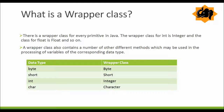Sometimes you will see later on with collections that you want to hold collections of objects and primitives together, and there you will need wrappers to make them compatible, because wrapper classes have the ability to wrap primitives into objects. They also contain other methods which may be used in processing variables of the corresponding data type.